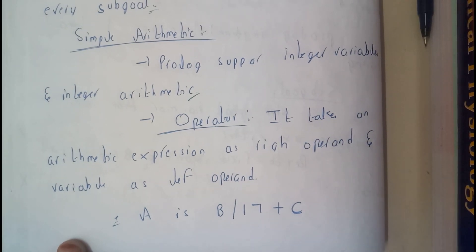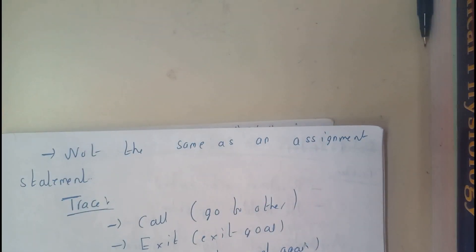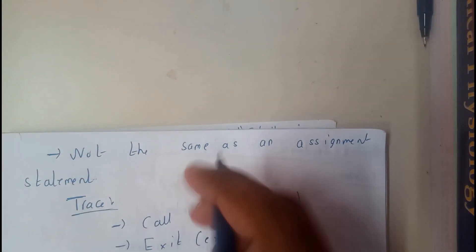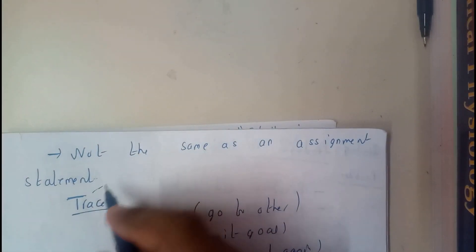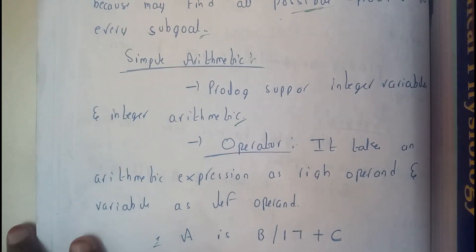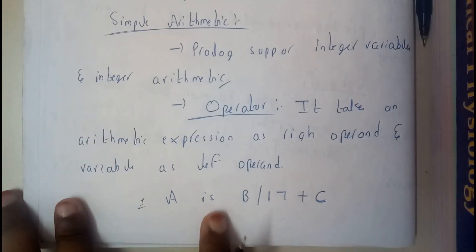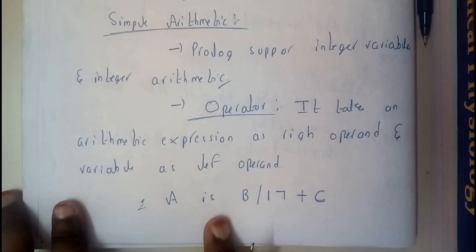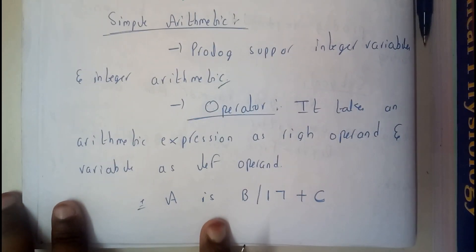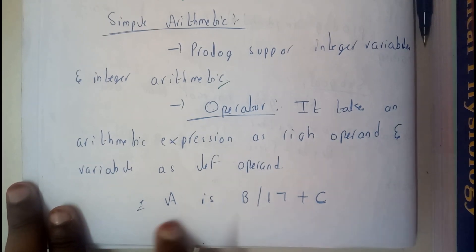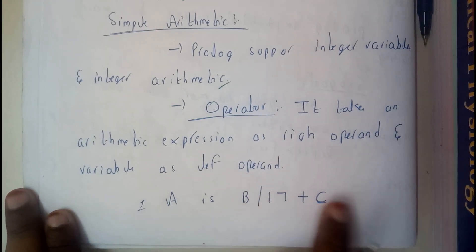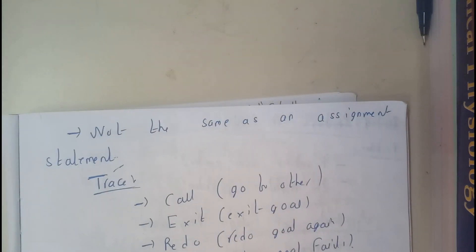Note that 'is' is not the same as the assignment operator. There is no equal-to assignment operator in Prolog — 'is' is used in terms of the word, but Prolog does not have a traditional assignment operator.